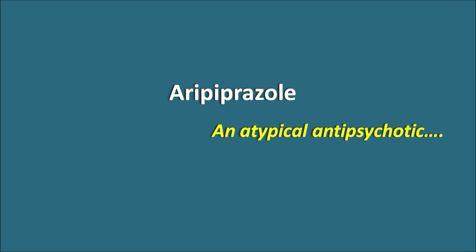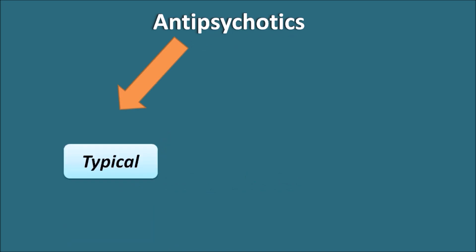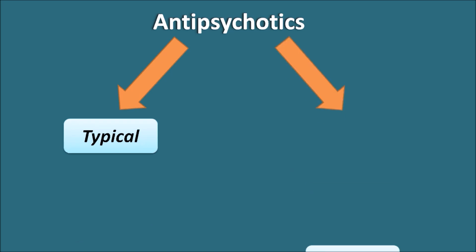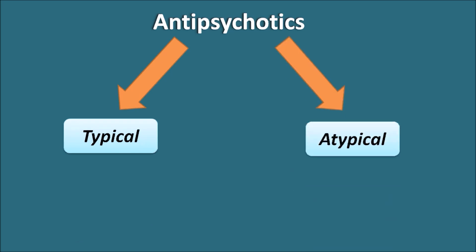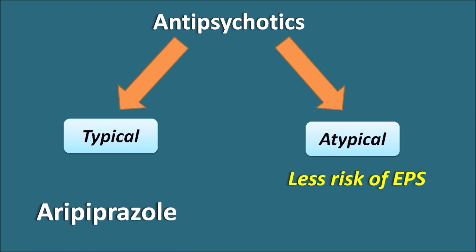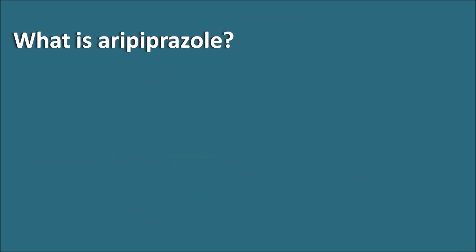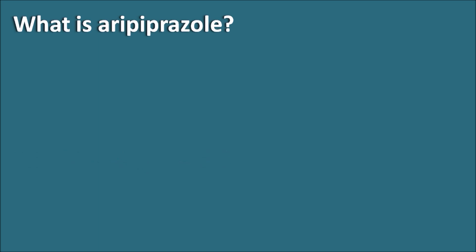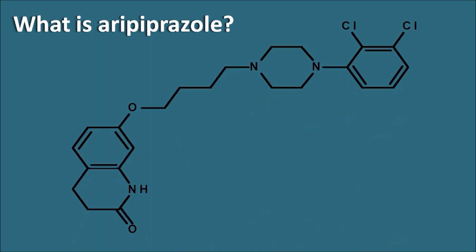Aripiprazole is an atypical antipsychotic with a unique mechanism of action. Antipsychotics can be classified into two categories: typical agents, which are the old generation antipsychotics, and atypical agents, which are the new generation antipsychotics. Atypical antipsychotics have less risk of extrapyramidal side effects. Aripiprazole belongs to the atypical category.